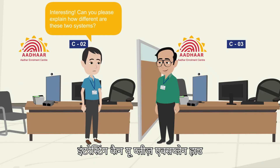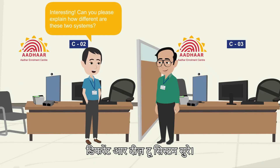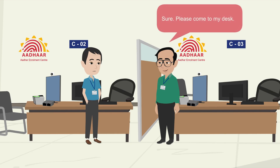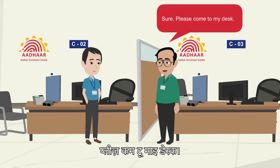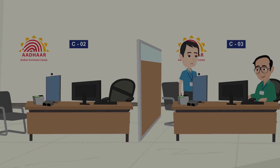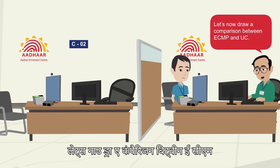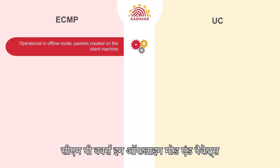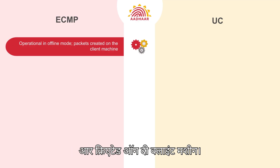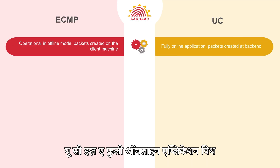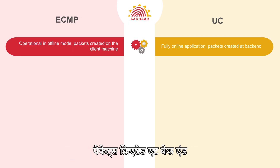Interesting! Can you please explain how different these two systems are? Sure! Please come to my desk. Let's now draw a comparison between eCMP and UC. eCMP works in offline mode and packets are created on the client machine, whereas UC is a fully online application with packets created at the back-end.